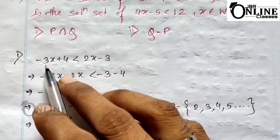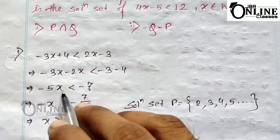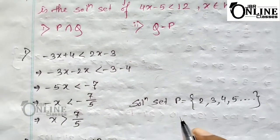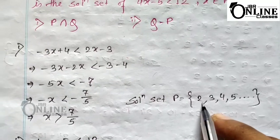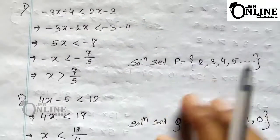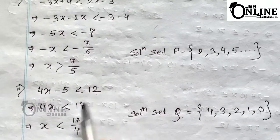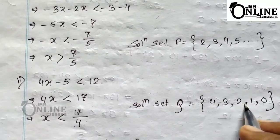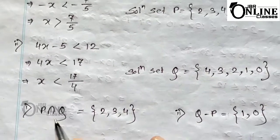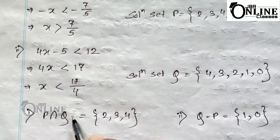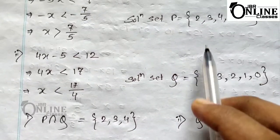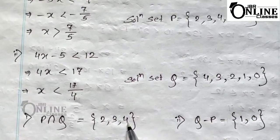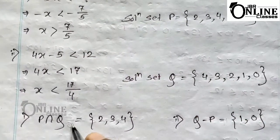For the first inequation: −3x + 4 < 2x − 3 gives −5x < −7, so x > 7/5. Since x ∈ N, the solution set P = {2, 3, 4, 5, ...}. For the second: 4x − 5 < 12 gives 4x < 17, so x < 17/4. Since x ∈ W, the solution set Q = {0, 1, 2, 3, 4}. P intersection Q is the common portion: P ∩ Q = {2, 3, 4}.